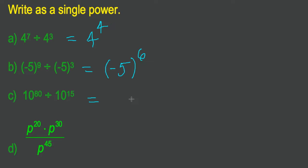With powers of 10, it works the same way. The base is 10, we leave that alone. 10 to the 80 divided by 10 to the 15. 80 subtract 15 is 65.